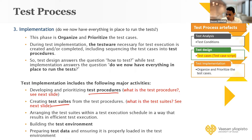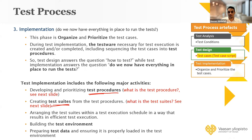Everything is clear here, but we don't know what the test procedure is, and we don't know what the test suite is. So let's see what these two things are with examples. In test implementation, we organize and prioritize the test cases. You have to group your test cases into a grouping, into a procedure, into a test suite, so that the test execution will be effective and efficient. The purpose of this implementation is to get everything ready.